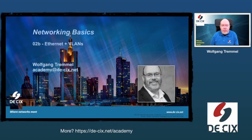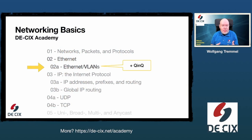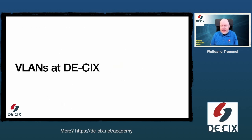In Networking Basics 2 and 2a, I talked about Ethernet and VLANs. Today I'm going to talk about Q-in-Q, VLAN double tagging. This is not really a basic topic, but it fits so well into the Networking Basics series that I thought I'd publish it here. It's also a little bit DE-CIX specific, but please stay and watch — you're going to learn something. Let's start talking about how we use VLANs at DE-CIX.